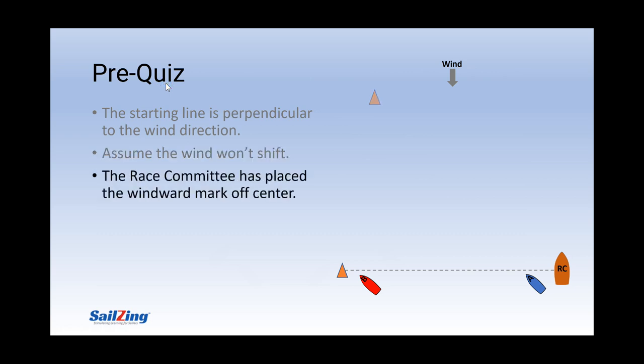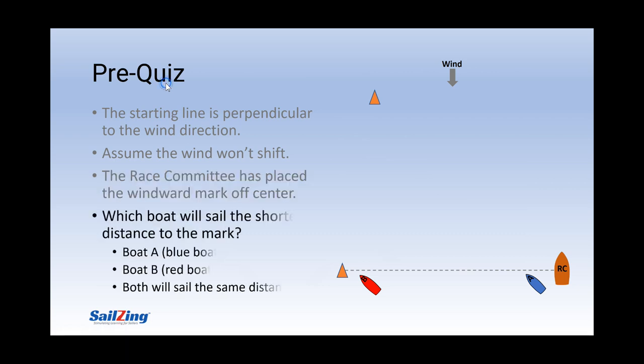The race committee has placed the windward mark considerably to the left of center as you can see here. The question is, which boat will sail the shortest distance to the mark?